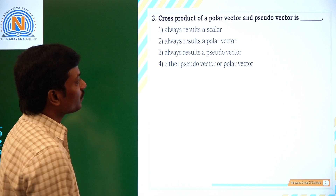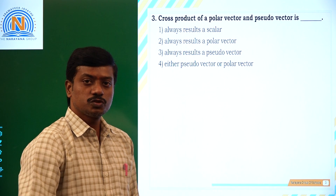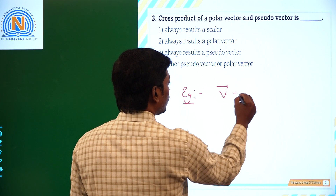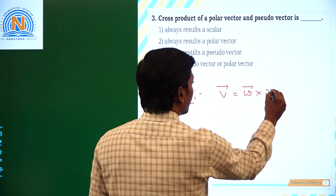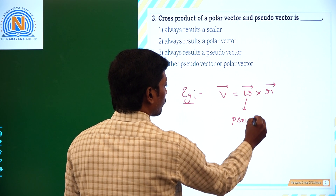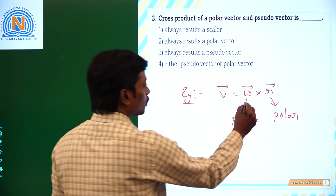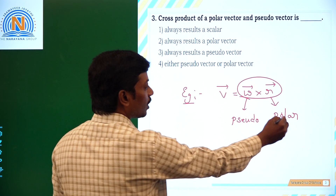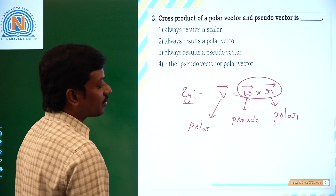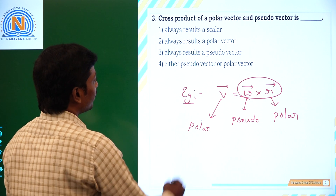The cross product of polar vector and pseudo vector — we will take one example. We know that V bar equals omega bar cross R bar. Angular velocity is a pseudo vector, and R bar is a polar vector. So if you do the cross product of a pseudo vector and a polar vector, we get a polar vector. The cross product of pseudo vector and polar vector always results in a polar vector.